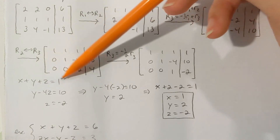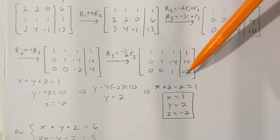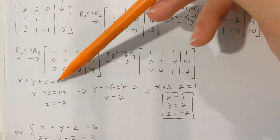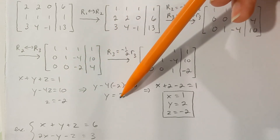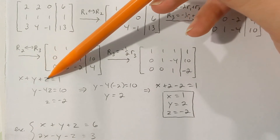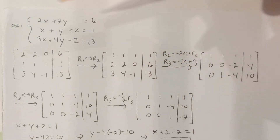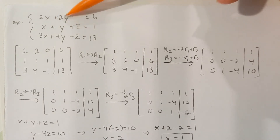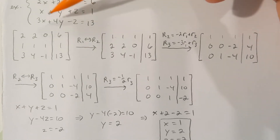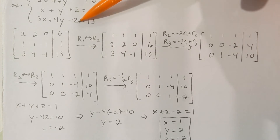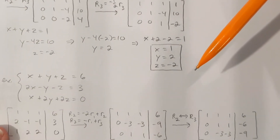Now I'm in row echelon form — 1s down the diagonal and 0s in the lower triangular part. Converting back to a system: x plus y plus z equals 1, y minus 4z equals 10, and z equals negative 2. Knowing z equals negative 2, I work backwards. Plugging into the second equation: y plus 8 equals 10, so y equals 2. Then with y equals 2 and z equals negative 2 in the first equation, x equals 1. So x equals 1, y equals 2, z equals negative 2. Checking: 2 plus 4 equals 6, yes; 1 plus 2 minus 2 equals 1, yes; 3 plus 8 minus negative 2 equals 13, yes. All three equations are satisfied.